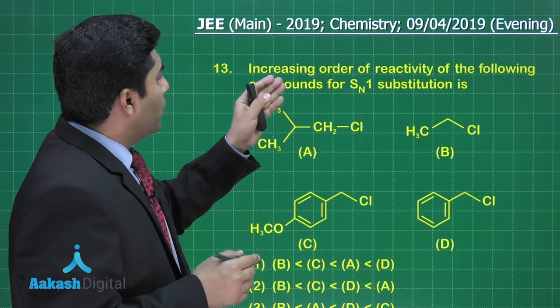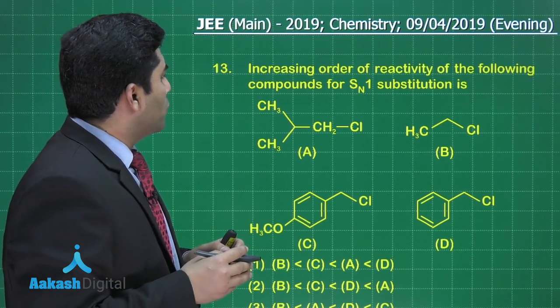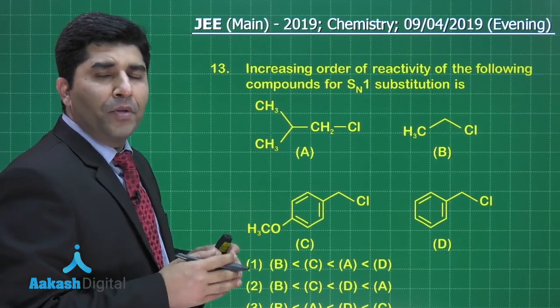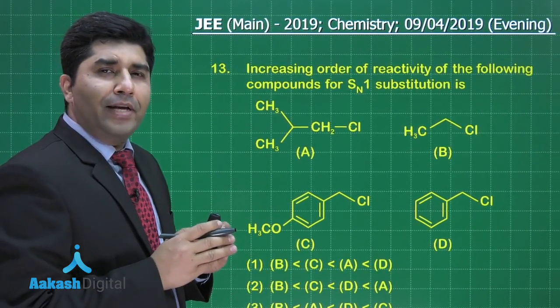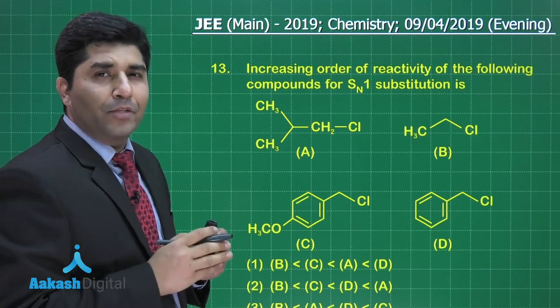In this question, increasing order of the reactivity of the following compounds for SN1 substitution is? We know that in SN1 reaction, the formation of carbocations takes place.